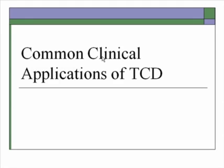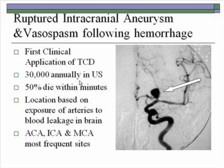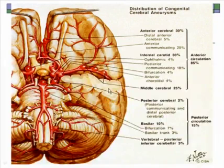Common clinical applications of TCD include ruptured intracranial aneurysm and vasospasm following hemorrhage — the first and still one of the standard uses of TCD. Annually in the United States we see over 30,000 ruptured intracranial aneurysms; half of those patients die within minutes, so for those who do get to the hospital it is very important to treat and monitor them. The location of vasospasm is based on the exposure of arteries to blood leakage, most commonly occurring in the anterior cerebral artery, internal carotid, and middle cerebral, though aneurysms also occur in the posterior circulation and basilar artery.